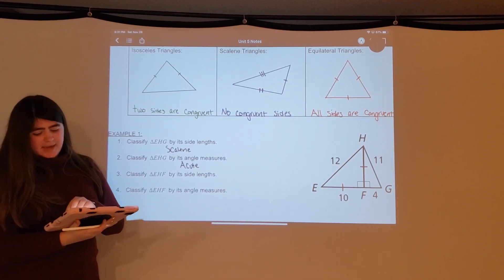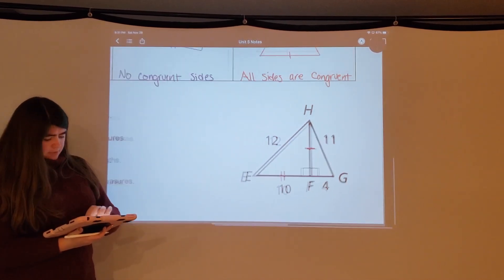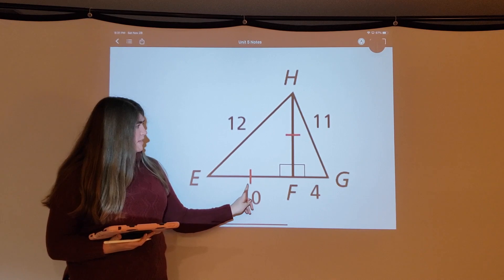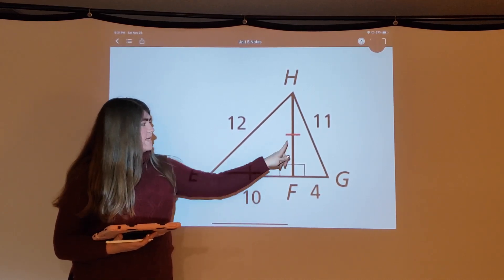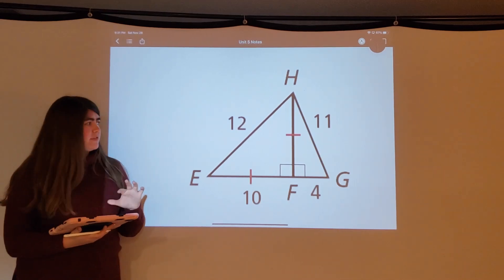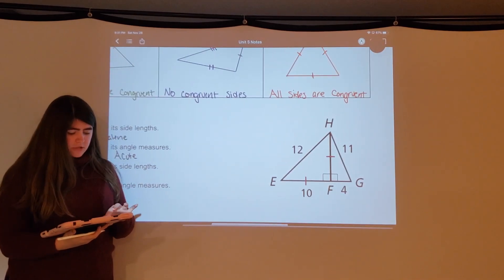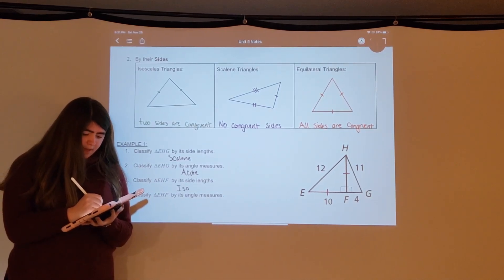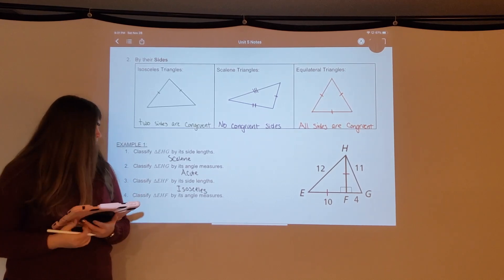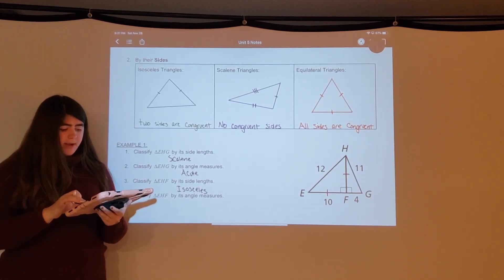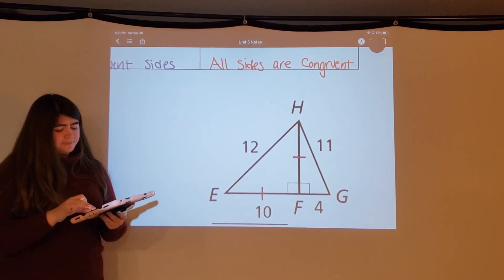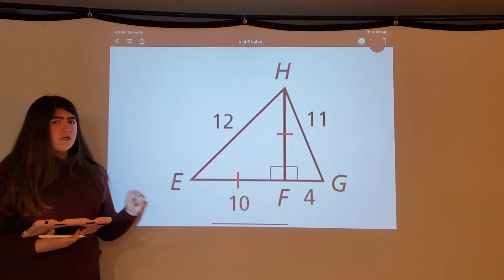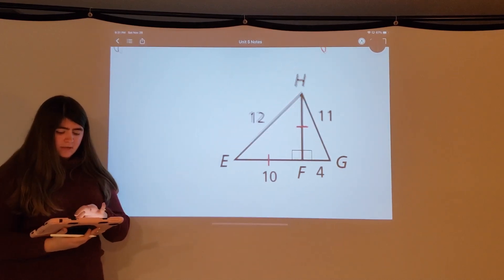Next we classify triangle EHF. By side lengths: I have sides of 10 and 10, indicated by tick marks, and a third side of 12. Since I have two congruent sides, this is an isosceles triangle — spelled I-S-O-S-C-E-L-E-S. By angle measures, triangle EHF has a right angle marked, and because there's a right angle in the triangle, it is automatically a right triangle.